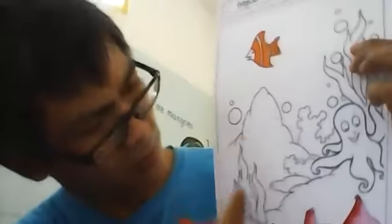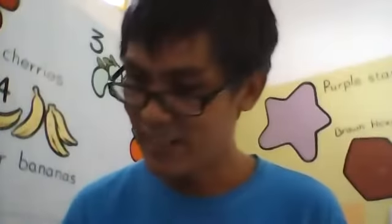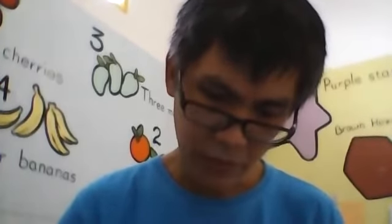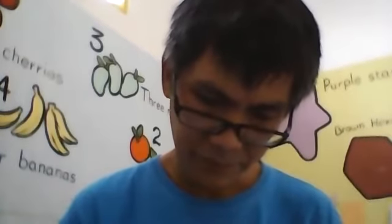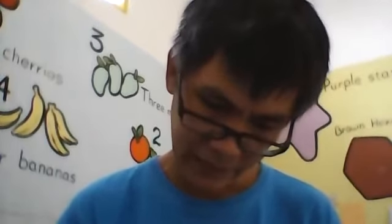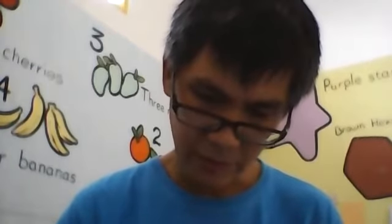Don't forget to color the octopus, the coral, the seaweed, and the water. Mr. Teguh will color the octopus with purple, and later Mr. Teguh will also mix it with another color — purple and pink. You will see the result.